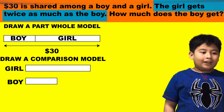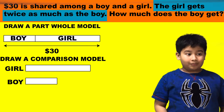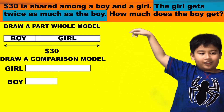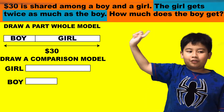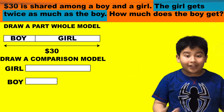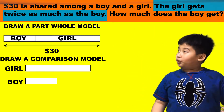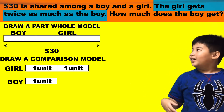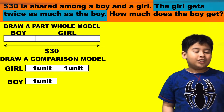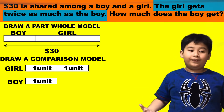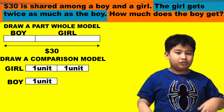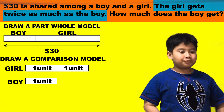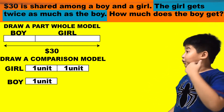Then the next step is drawing a comparison model, because the girl gets twice as much as the boy — so you know it's a comparison model, and you draw a comparison model. Just imagine that the boy has one unit, and the girl has two, because one times two equals two.